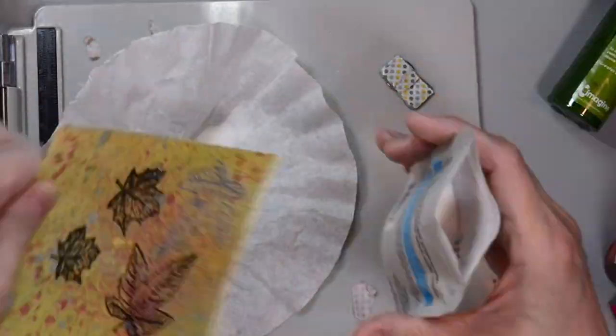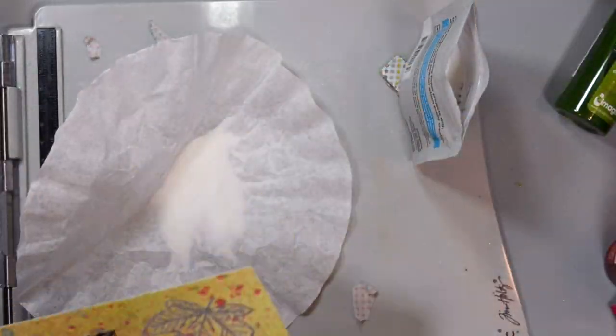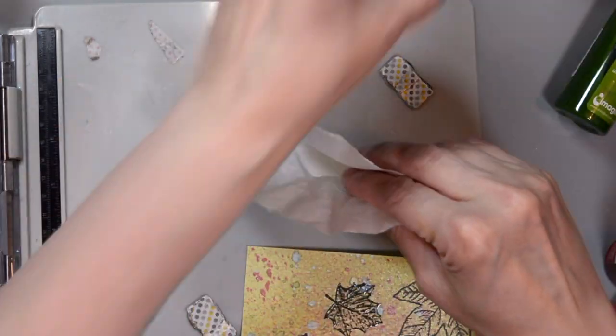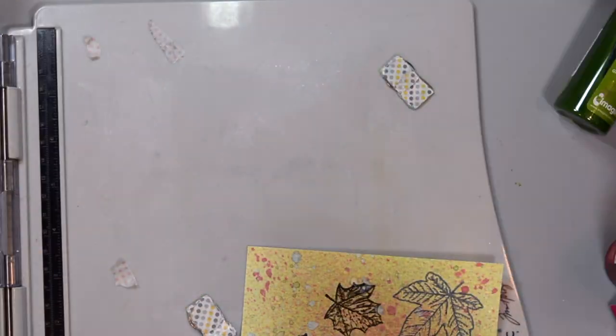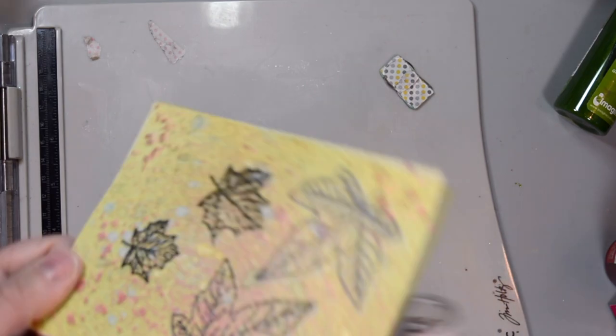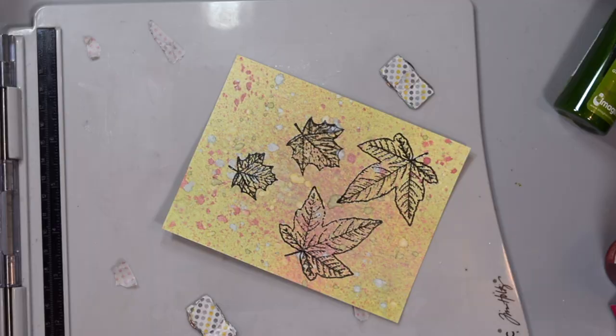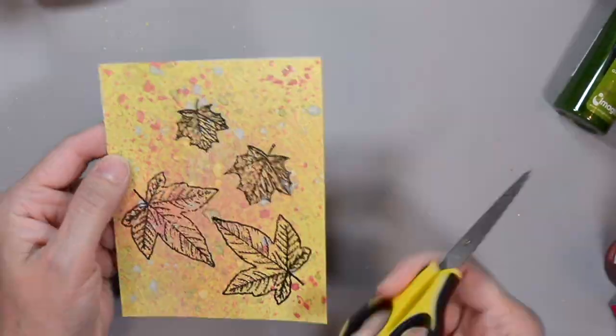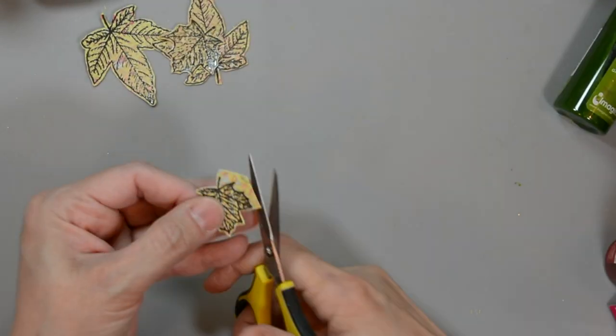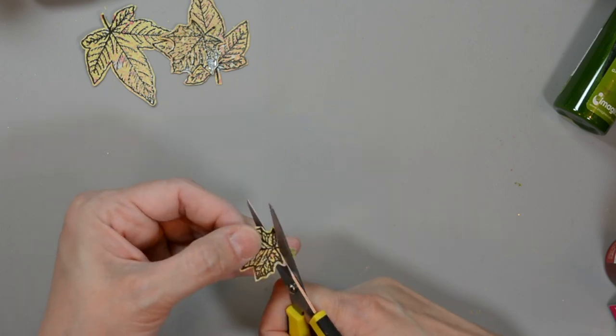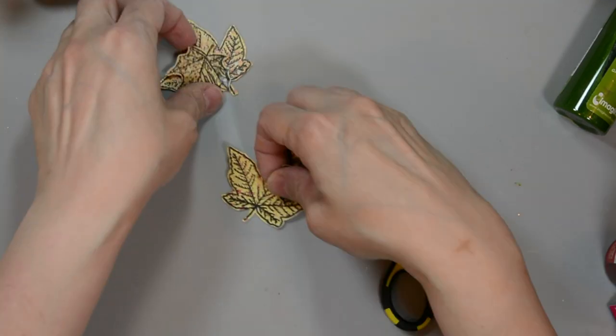Alright, so I'm going to add a little more embossing powder there. Make sure I get nice even coverage. And I'll heat set it. I like to heat from the bottom before the top. It helps minimize the warping of my paper. Although I do still get some warping, it minimizes some. Once I'm done fussy cutting all my leaves here, we can start working on our project.